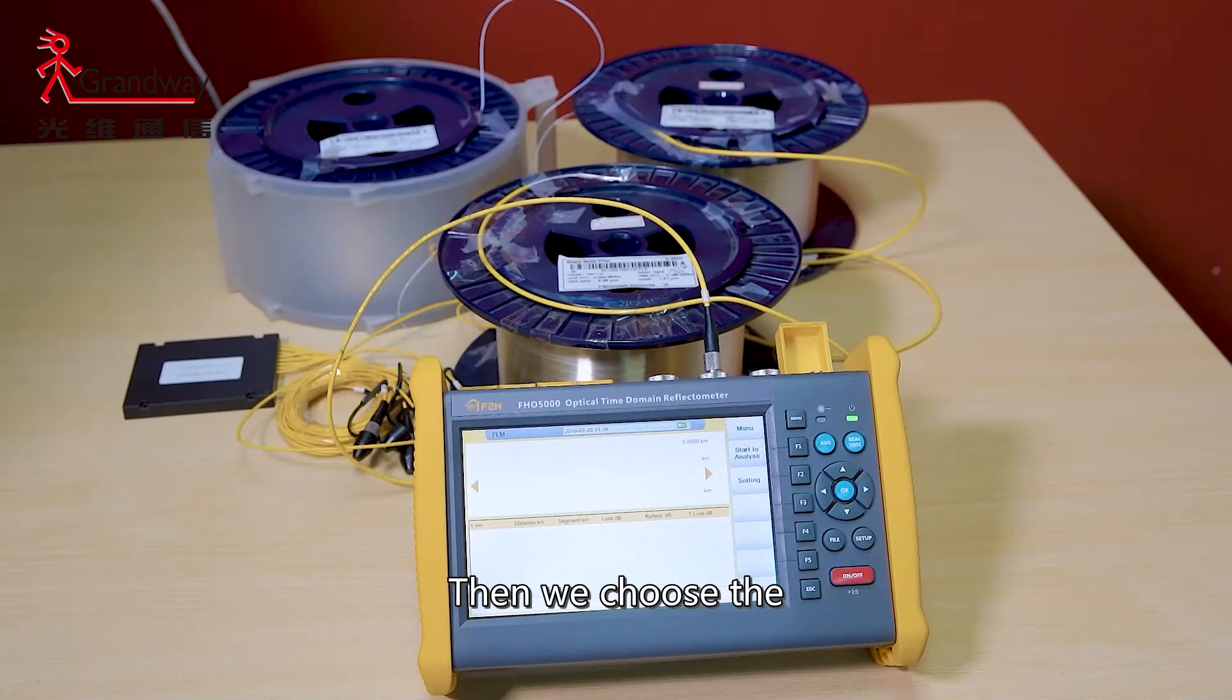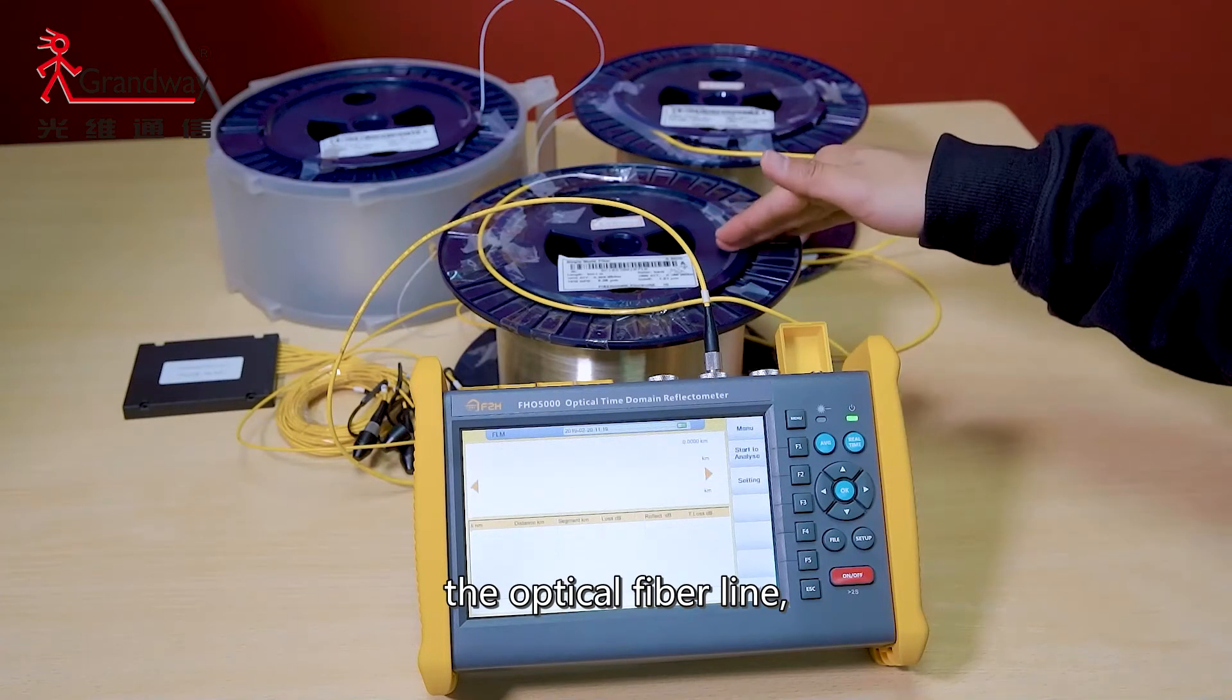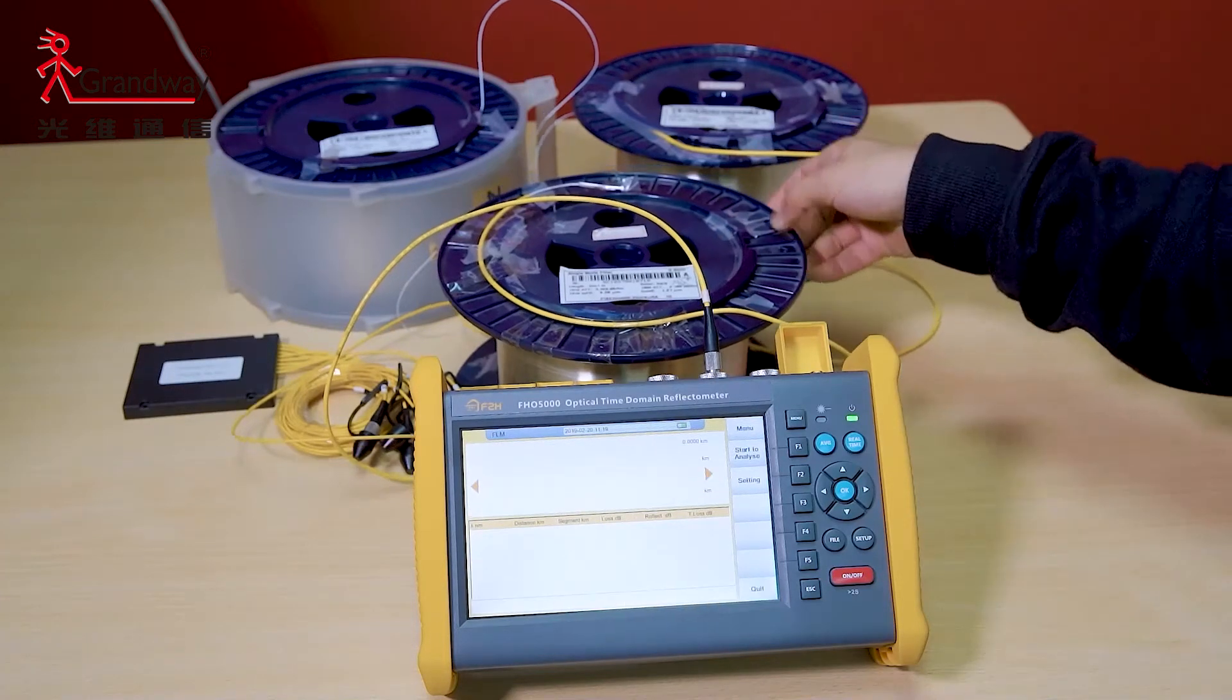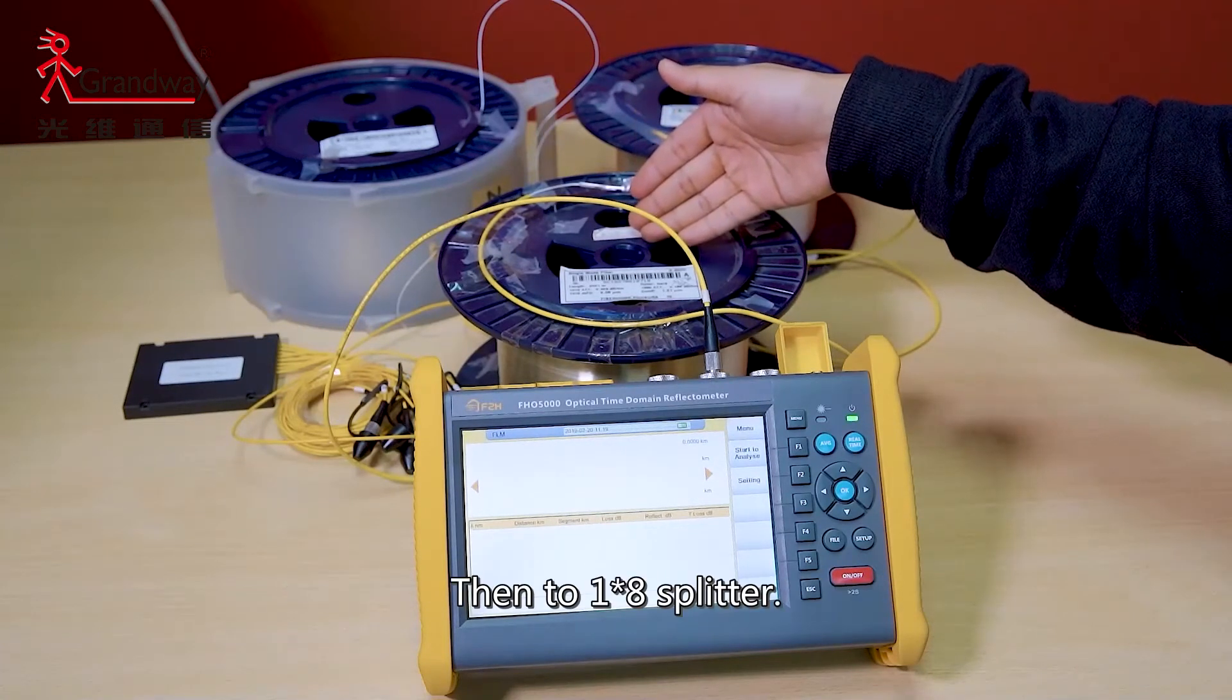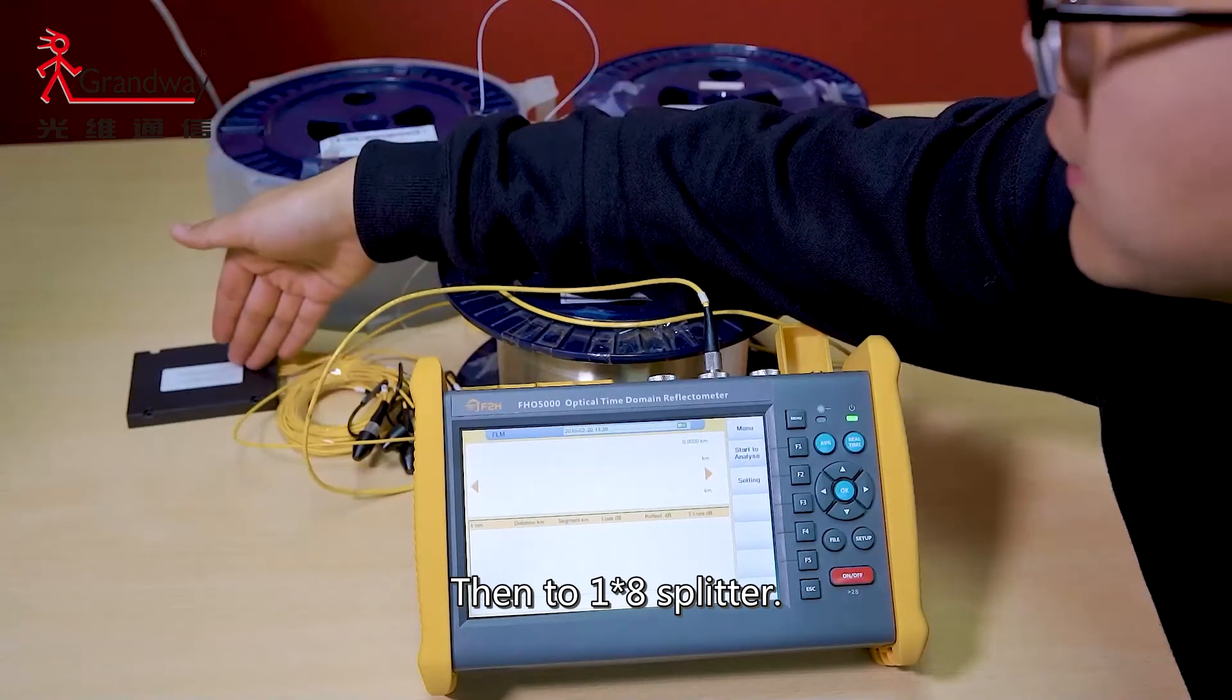Then, we use the FLM function to test the optical fiber line. The first segment fiber is 2.5 kilometers, then to 1-2-8 splitter.